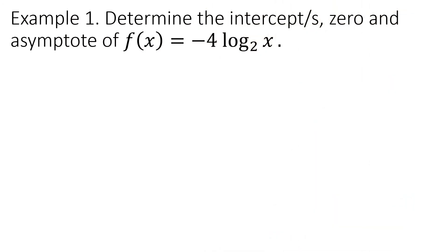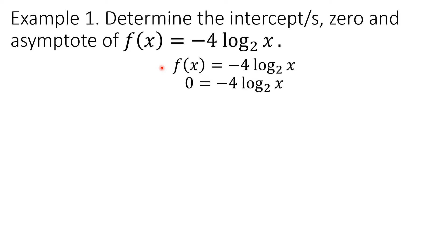Example 1: Determine the intercept, zero, and asymptote of f(x) = −4·log₂(x). Let us first determine the x-intercept or the zero of the given function. To find the x-intercept or zero, we substitute 0 to y. Recall that f of x is also y, so let us substitute 0 for y.